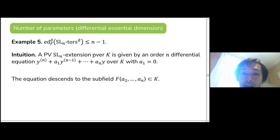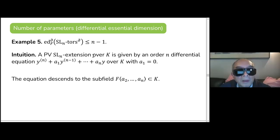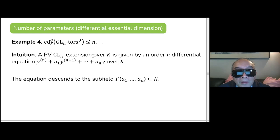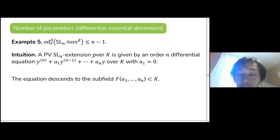For SL_n extensions, they're given by differential equations where you can set the A₁ coefficient to zero, so you need one fewer parameter. An audience member asks: why is it clear that a linear differential equation with N parameters cannot be simplified to fewer?